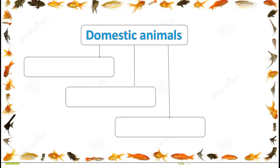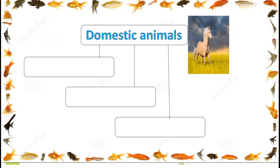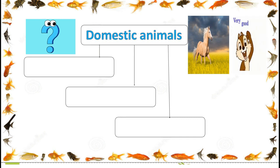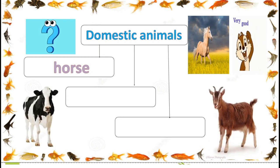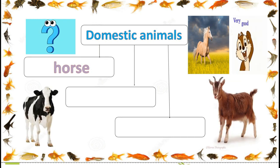Domestic animals. Children, can you guess the name of this domestic animal? Very good. This is a horse. In the same way, you have to complete this concept map.